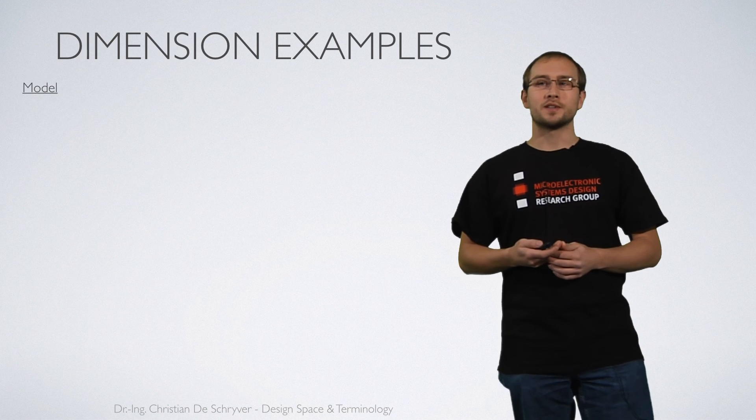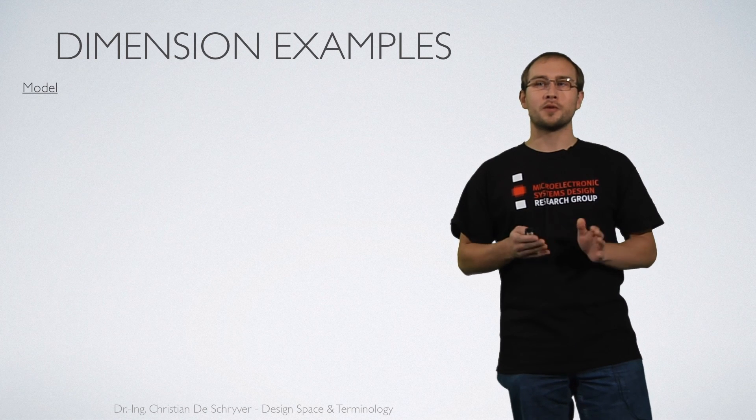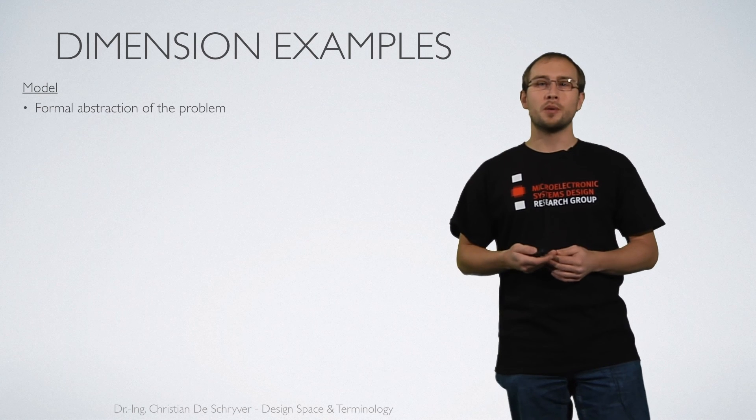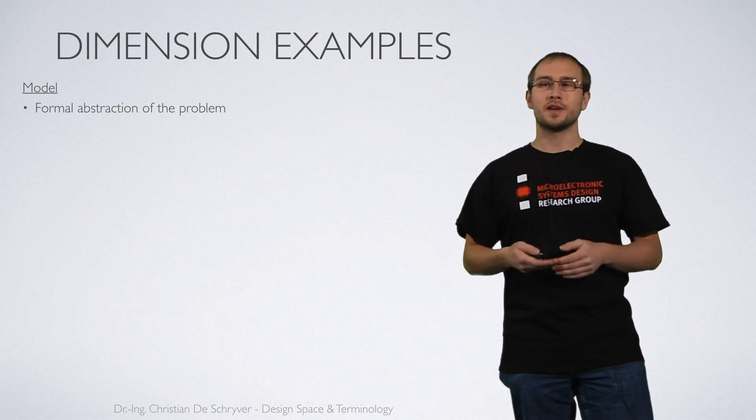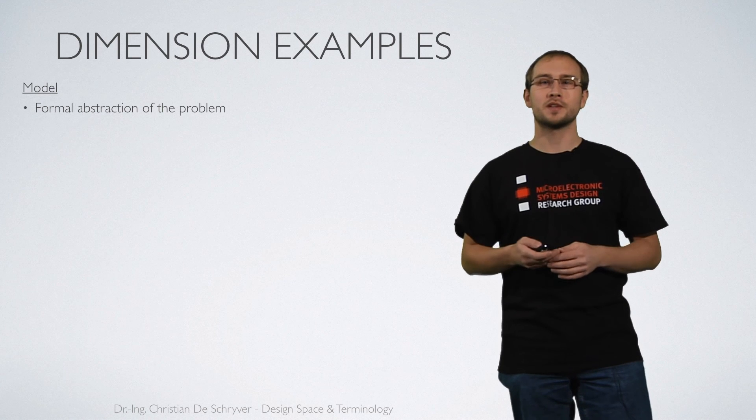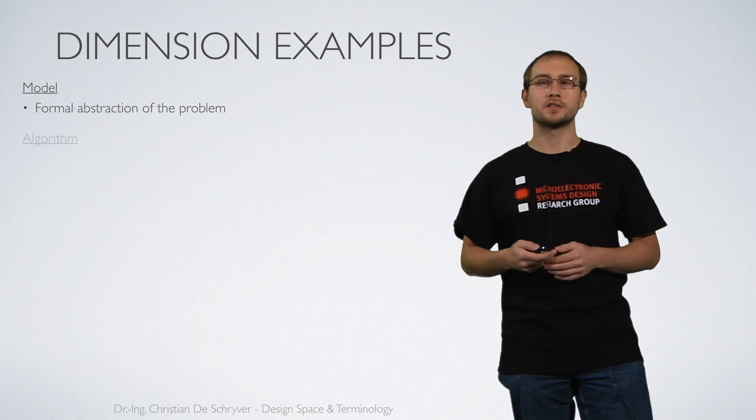One is the model that is underlying the problem. I will talk about that in a few minutes in detail. In general the model is a formal abstraction of the problem and it has a very big influence on the remaining process that we carry out when designing a system.